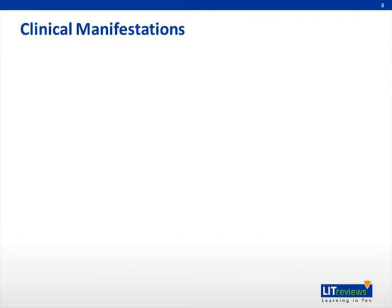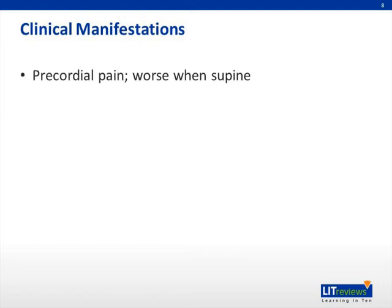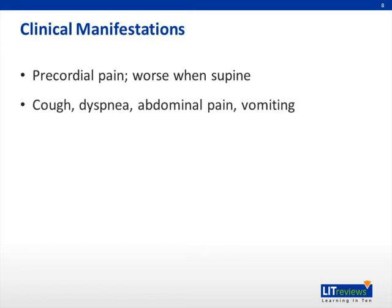The first symptom of pericardial disease is often precordial pain, which is typically sharp or stabbing in nature and sensed over the precordium and left shoulder or back. Pain may be worse when supine and relieved by sitting or leaning forward, likely referred pain from diaphragmatic and pleural irritation. Cough, dyspnea, abdominal pain, vomiting, and fever may also occur.